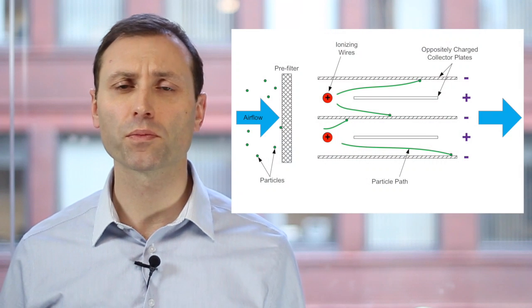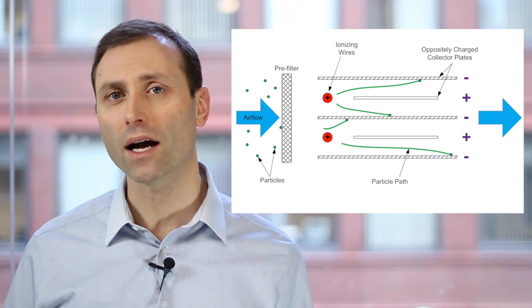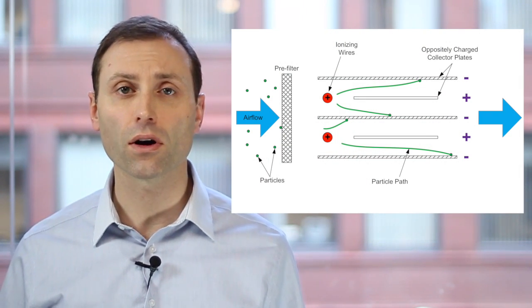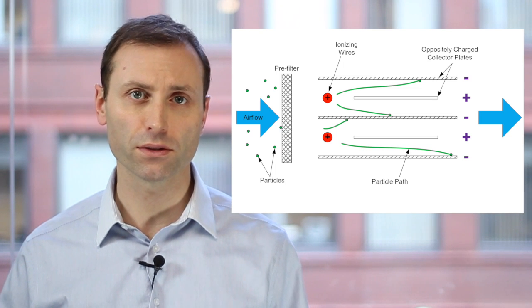Some air cleaners charge particles and then release them into the space. These are typically called ionizers. The particles are removed from the air, but not necessarily removed from the space. Other air cleaners not only charge particles, but also collect those particles on oppositely charged plates. These are typically called electrostatic precipitators.